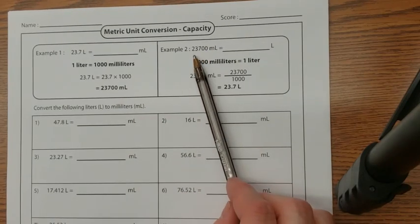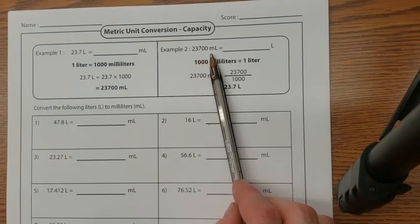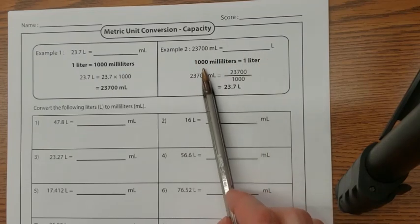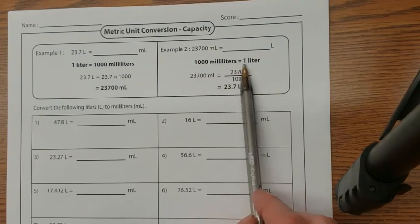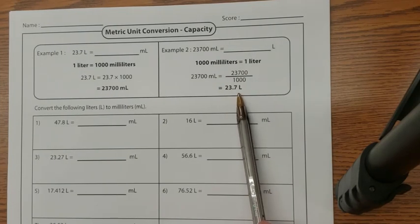You can go the other way around as well. So if you have 23,700 milliliters, and we want to convert that to liters, well, all we have to do is divide it by a thousand. So when I divide that by a thousand, I get 23.7.